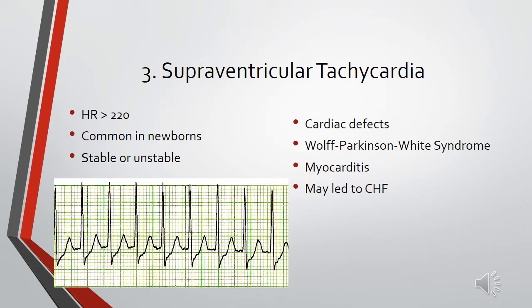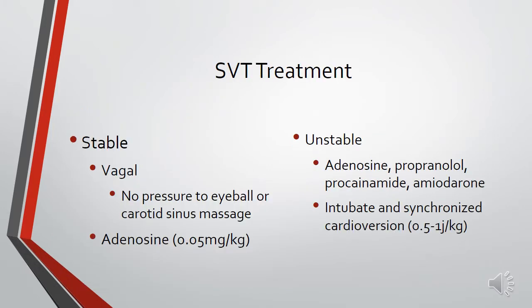Supraventricular tachycardia (SVT) is a heart rate greater than 220 beats per minute, common among newborns, classified as stable or unstable. It can be caused by cardiac defects, Wolf-Parkinson-White syndrome, or myocarditis, and repeat episodes may lead to congestive heart failure. Treatment for stable SVT includes vagal stimulation such as suctioning or placing an esophageal probe. Carotid sinus massage and eyeball pressure are contraindicated in infants because pressure on the eyeballs can cause retinal detachment.